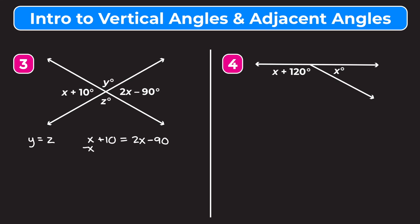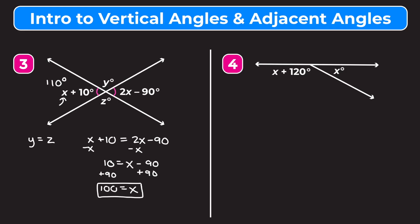Setting x plus 10 equal to 2x minus 90: subtracting x from both sides gives 10 equals x minus 90, then adding 90 to both sides gives x equals 100. Plugging x back in: 100 plus 10 equals 110 degrees, so that angle is 110 degrees, and the vertical angle across from it is also 110 degrees.